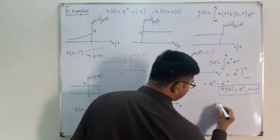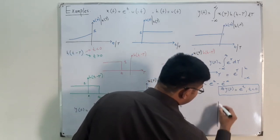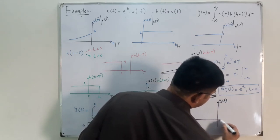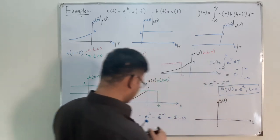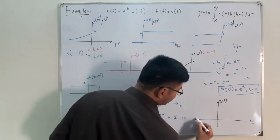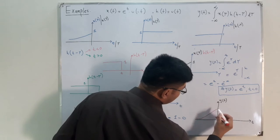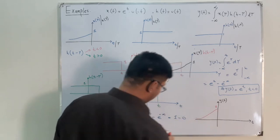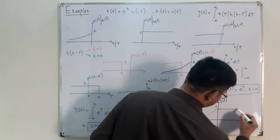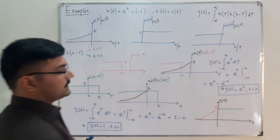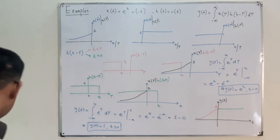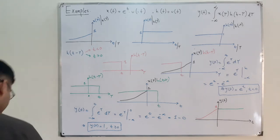Let me draw the graph. On the y(t) axis versus the t axis: for t < 0, y(t) = e^t, which rises toward 1 as t approaches 0. For t ≥ 0, y(t) = 1, a constant. So the output smoothly reaches 1 and stays there. That is the answer to the first example.